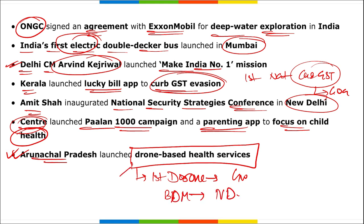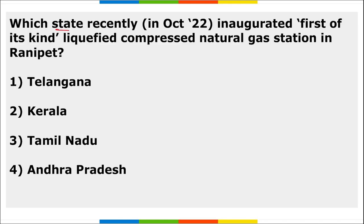Arunachal Pradesh launched drone-based health services. The first Drone Mela was held in Gwalior, while the biggest Drone Mela was held in New Delhi. Himachal Pradesh was the first state to adopt a drone policy, and Uttarakhand was the first state to use drones in its healthcare sector.